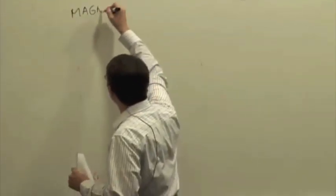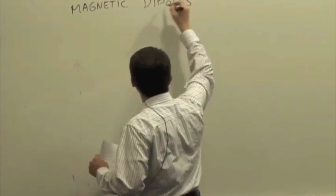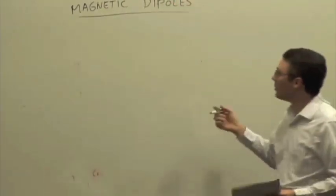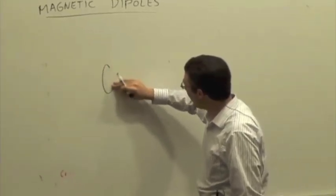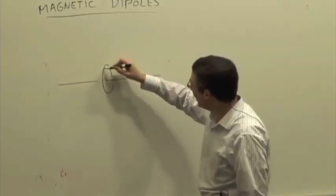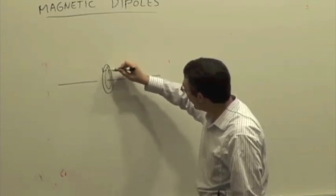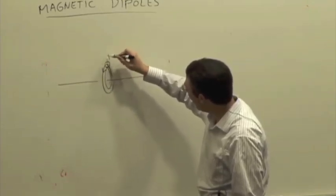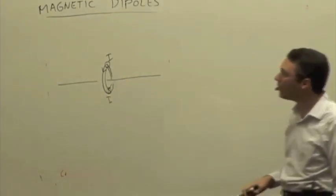Last time we talked about magnetic dipoles. We said that a current loop is a magnetic dipole. So if you have a loop of current, I'll draw it this way, where this is the axis going through the loop and the loop is such that conventional current is coming out towards us at the top and going into the board at the bottom of this loop.